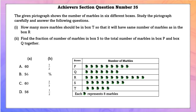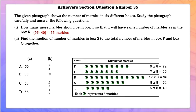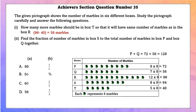Achieve section question number 35. The pictograph shows the number of marbles in 6 different boxes. How many more marbles should be in box T so it equals box R? 96 − 40 = 56 marbles. For the second part: box S has 64 marbles and box P + Q together has 128 marbles. The fraction of marbles in S to total of P and Q is 64/128 = 1/2.